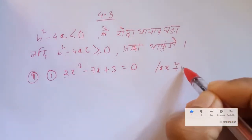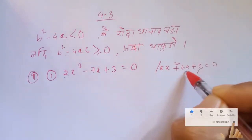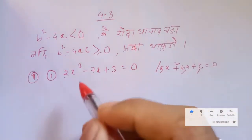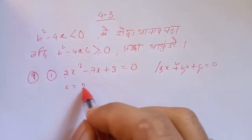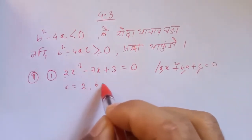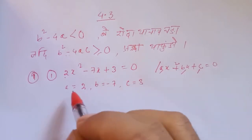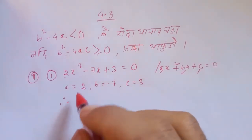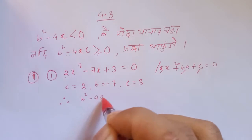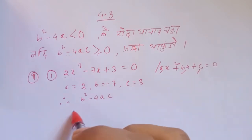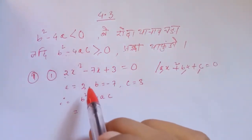x squared plus bx plus c equal to zero. So c and b and a. Here, a equal to two, b equal to minus seven, c equal to three. Therefore, b squared minus four is to compare.